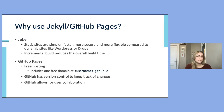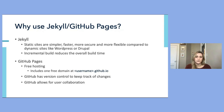So why should you use Jekyll and GitHub Pages? Static sites are simpler, faster, more secure, and more flexible than a dynamic site like WordPress or Drupal. The incremental build option reduces your overall build time by only regenerating pages that have been updated since the last time it was built.